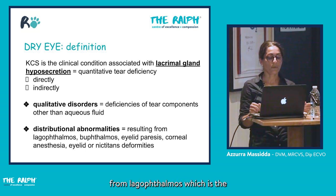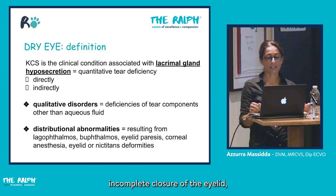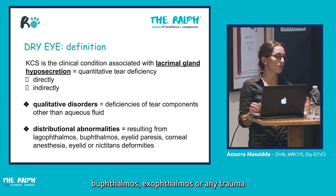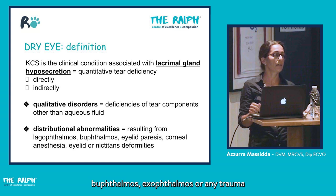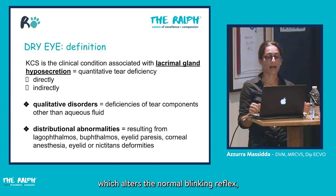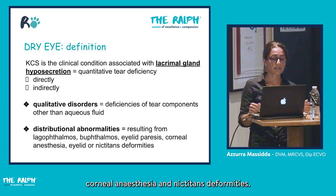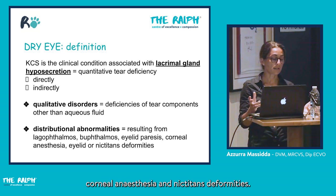We also have distributional abnormalities that lead to quick evaporation of the tear film from the ocular surface. These can result from lagophthalmos, which is the incomplete closure of the eyelid, exophthalmos, any trauma to the eyelid that alters the normal blinking reflex, corneal anesthesia, and nictitans deformities.